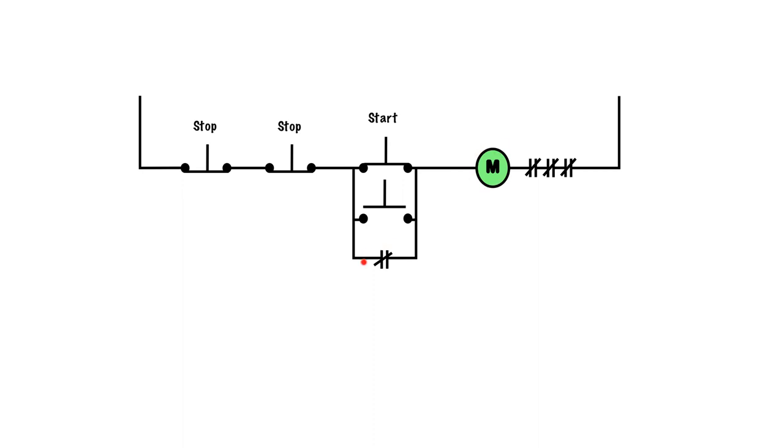M coil is physically attached to these contacts. So whenever these energize, these will close. When we let go of the pushbutton and it springs back to the normally open position, it now has a complete path that goes through the normally closed contacts and energizes M as well, so it can be held in or sealed in.